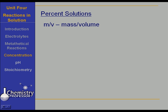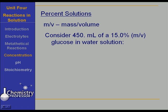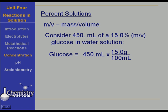Now mass-volume or weight-volume solutions. Consider 450 milliliters of a fifteen percent mass-volume glucose and water solution. Watch the way we handle the units. The weight of glucose you use is 450 milliliters times fifteen grams per hundred milliliters — this is what we mean by a fifteen percent mass-volume solution. That means you would take sixty-seven and a half grams of glucose and dissolve it in enough water to make 450 milliliters of solution.